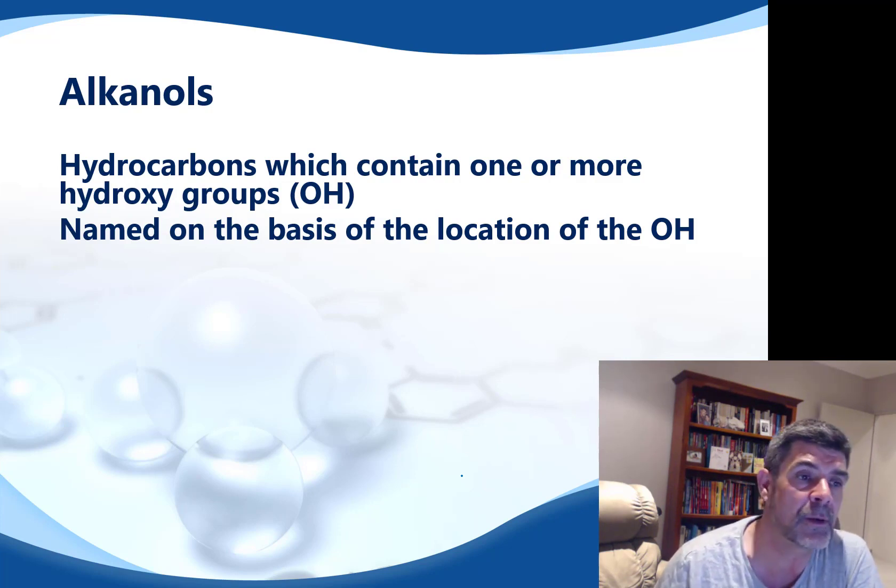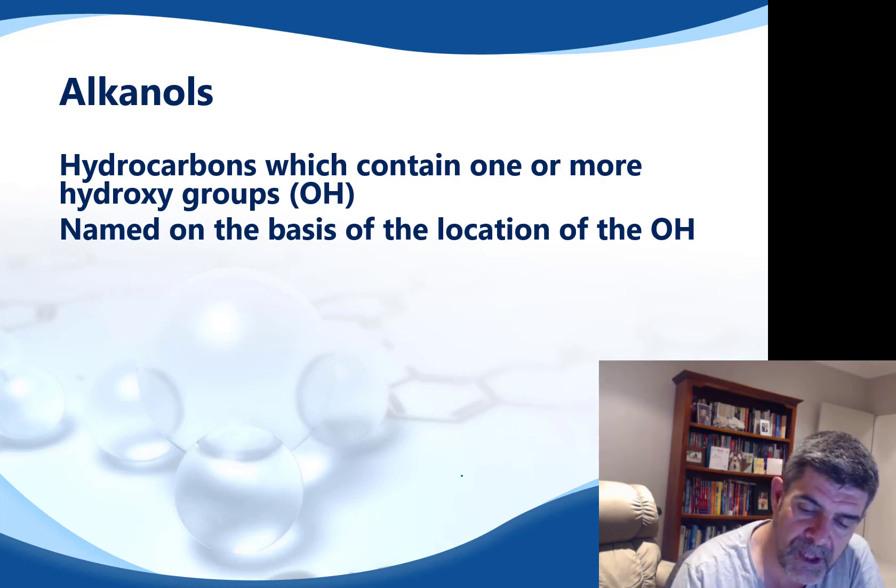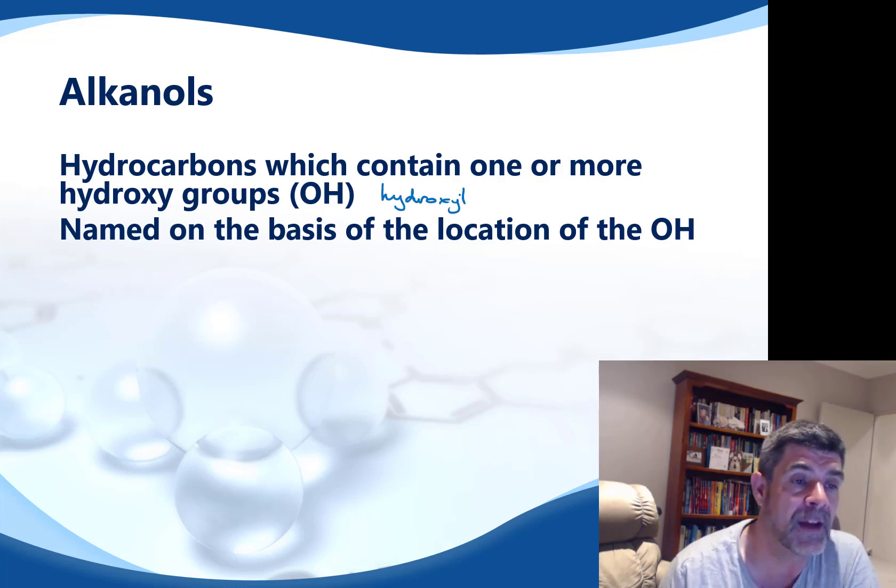So the first thing that we need to look at are the alkanols as a group. And therefore, in order to define them, we obviously define our different homologous series on the basis of their functional group. And the functional group is a hydroxy or a hydroxyl group. And the hydroxyl group is the OH group.